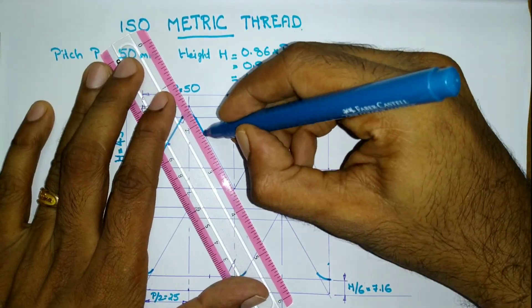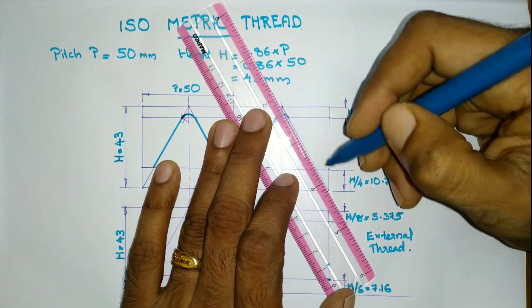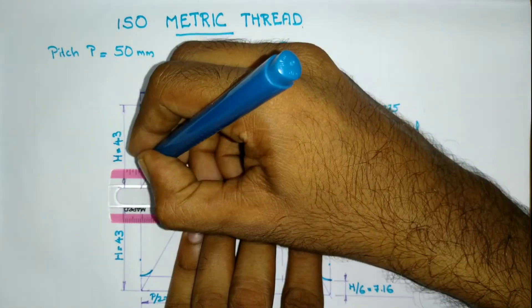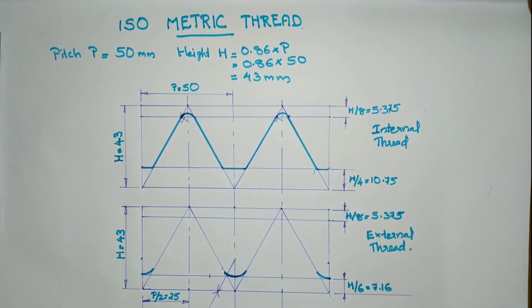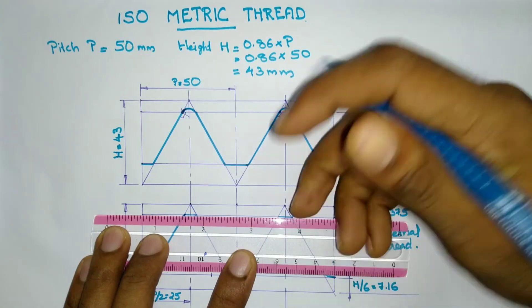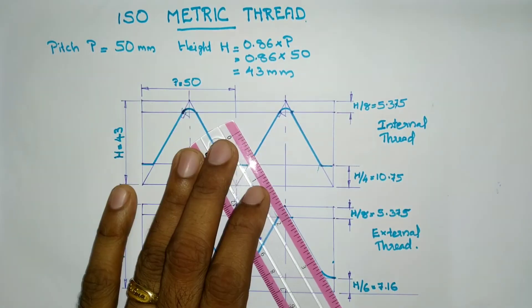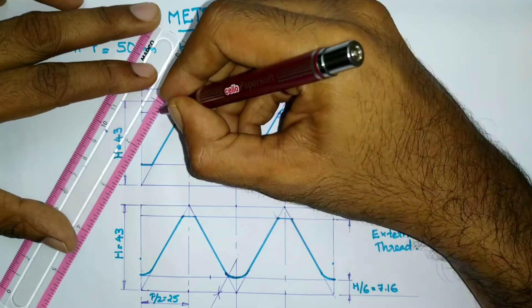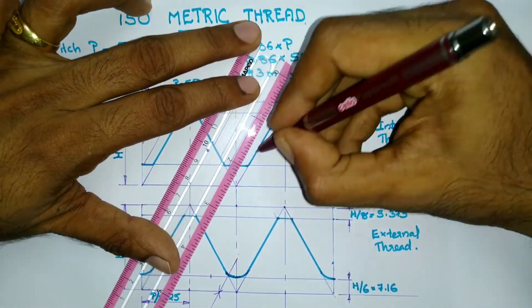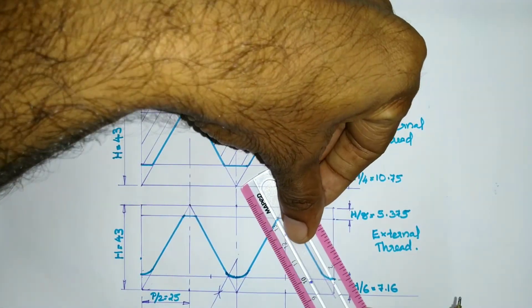Draw the flanks and crest portions of the internal and external threads. Now hatch both the threads.